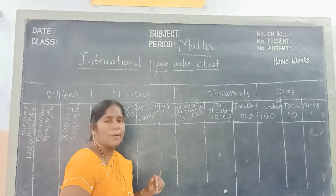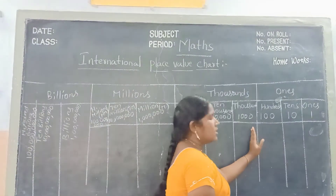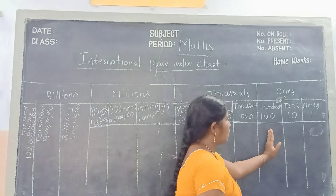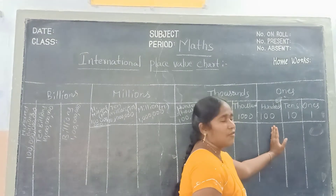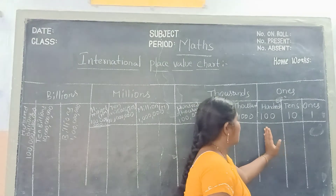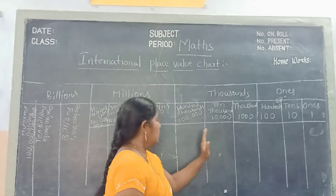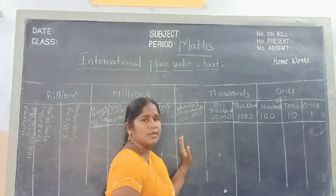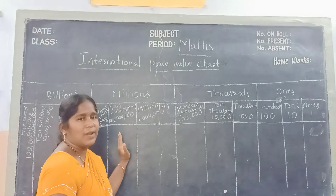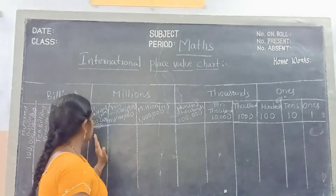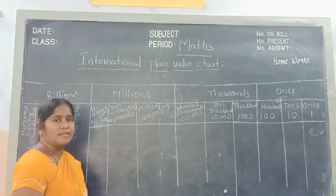In the International Place Values Chart, now we put commas like this — every three digits, children. First we keep the comma after the ones period, which has three places. And next in the thousands place we put a comma after three places. And next in millions also we keep a comma after three periods.